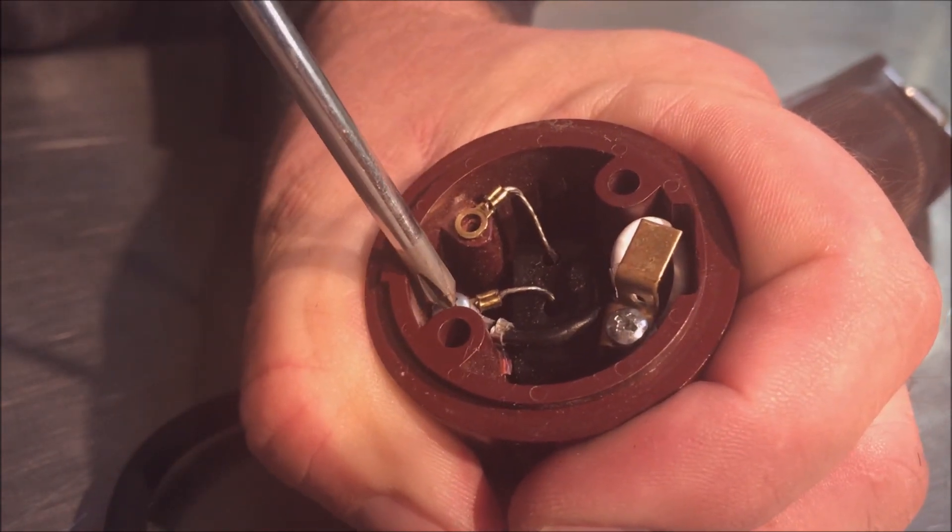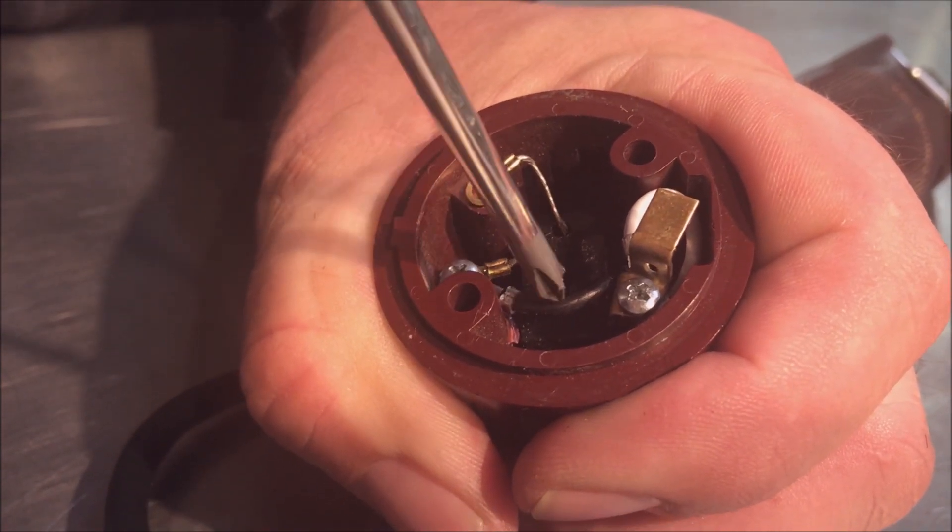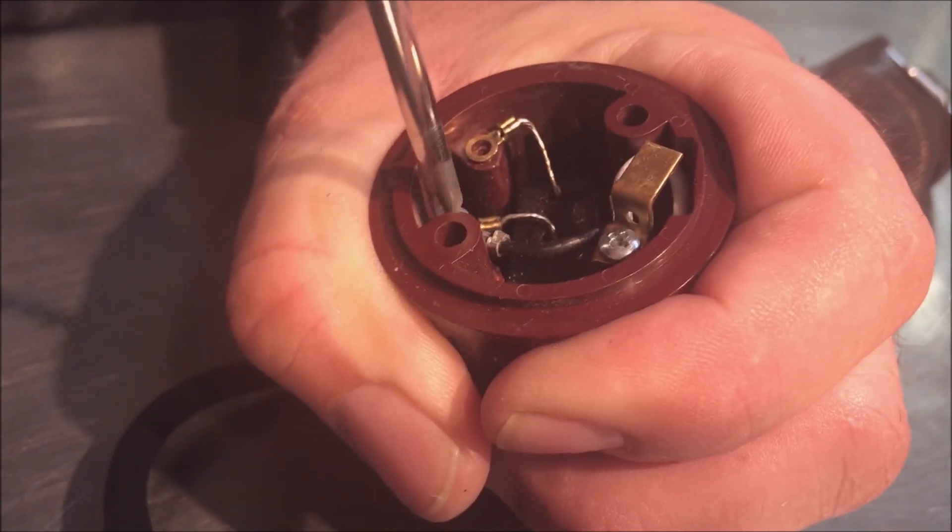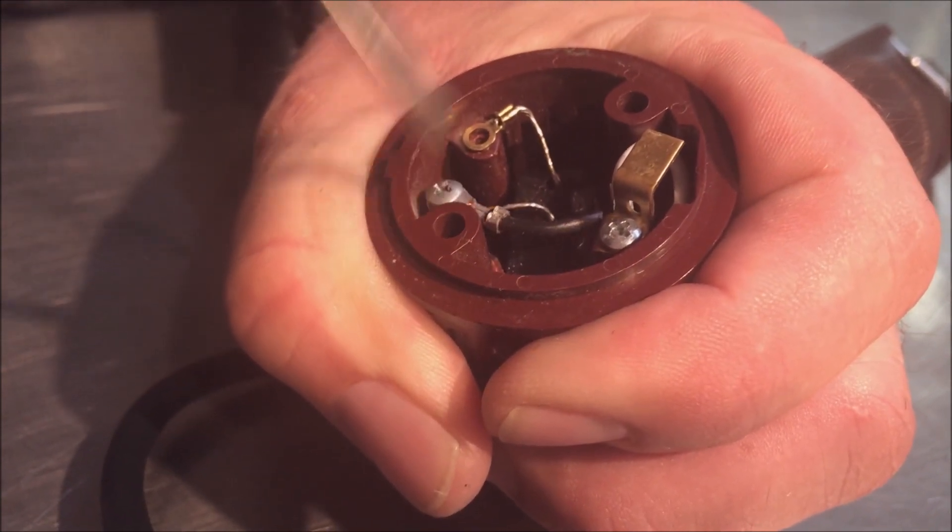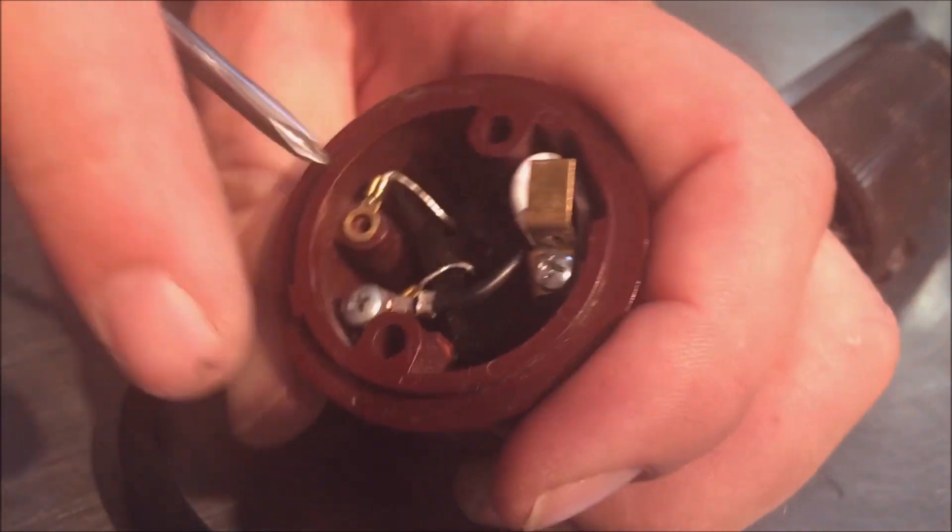Then you'll have a short post here that's got two wires, one from the switch and one from your cord going to it. You want to remove the screw from it and set the screw to the side.